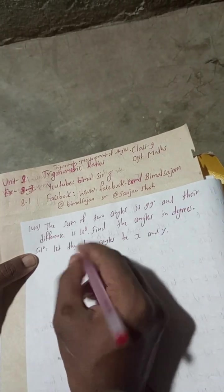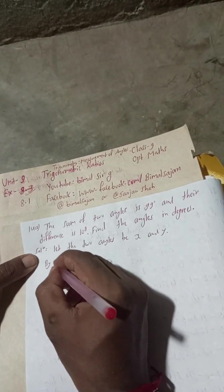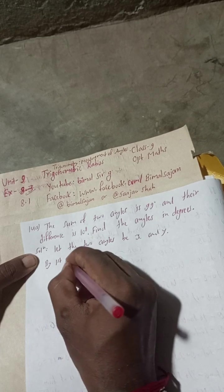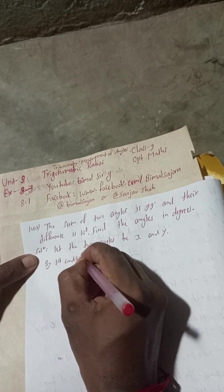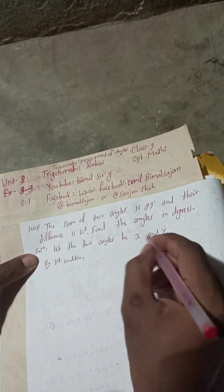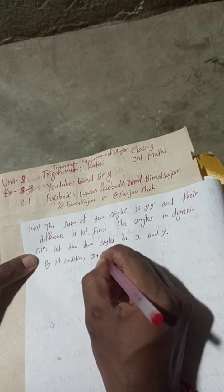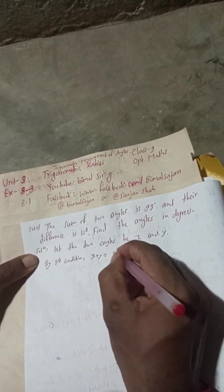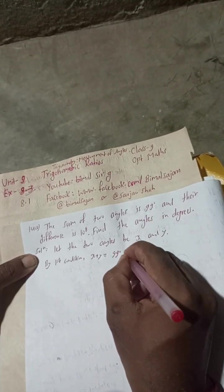Now by the first condition, the sum of two angles, that is x plus y, is equal to 99 degree. This is our equation 1.